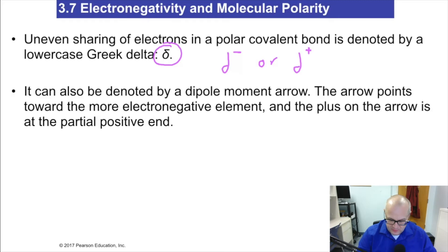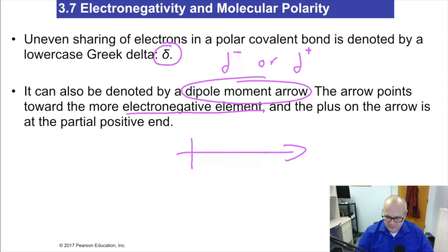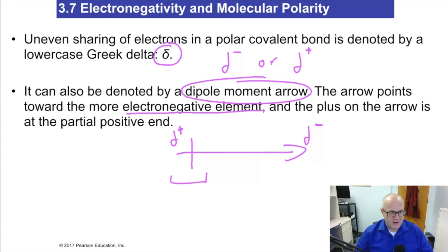We're also going to learn about dipole moment arrows. These arrows always point towards the more electronegative element. The delta-negative is at the arrowhead, and the delta-positive is at the tail — that tail part of the arrow kind of resembles a plus sign, which is how I remember that delta-positive goes on that side.